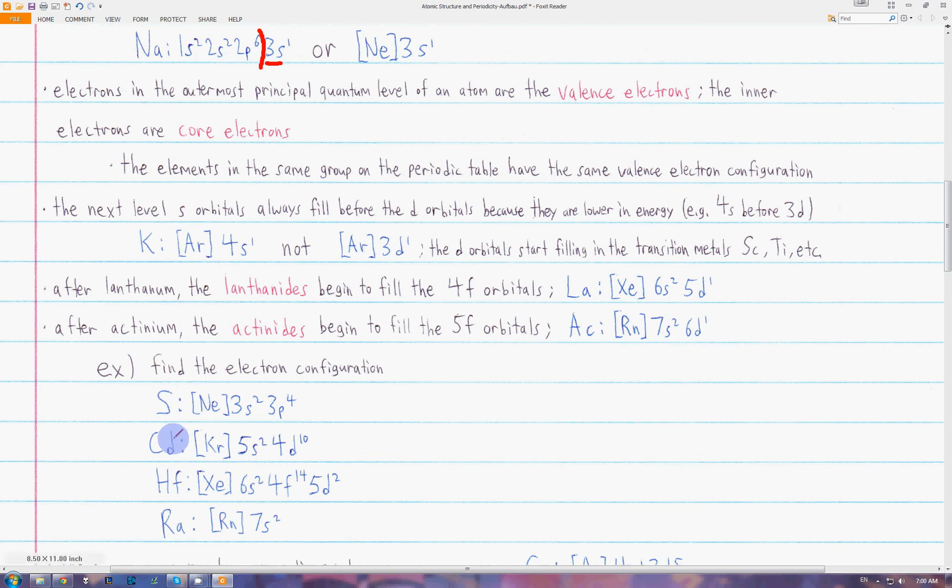For cadmium, the closest noble gas is krypton. We go down one to rubidium. Rubidium and strontium will be the 5s2. Then we start filling the transition metals. Cadmium is the last transition metal in this row, so it will go all the way up to 4d10, which is the maximum for the d subshell. Remember that the d subshell has 5 orbitals, so it can hold 10 electrons.